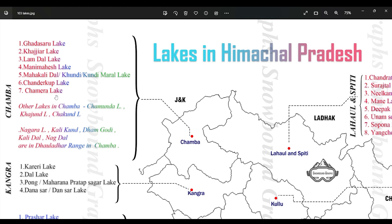Let's start with District Chamba. The first one is Gadasru Lake, it is located in Chura Valley. Second one is Gajiar Lake, it is located around Dalhousie town. Third one is Lamda Lake, it is located in the Toladhar Range. Next one is Manimahesh Lake, it is situated around Bharmour town. The next one is Mahakali Lake, also called Kundi or Kundi Mara Lake, and it is also located in the Chura Valley.